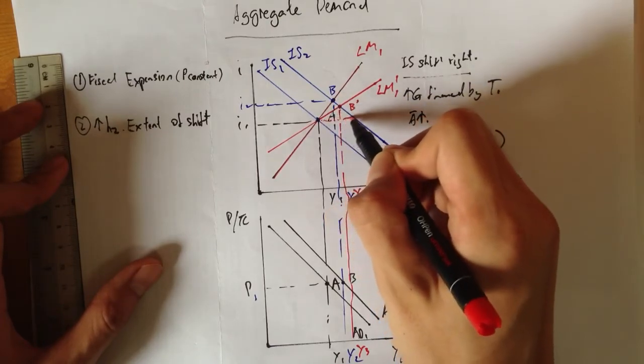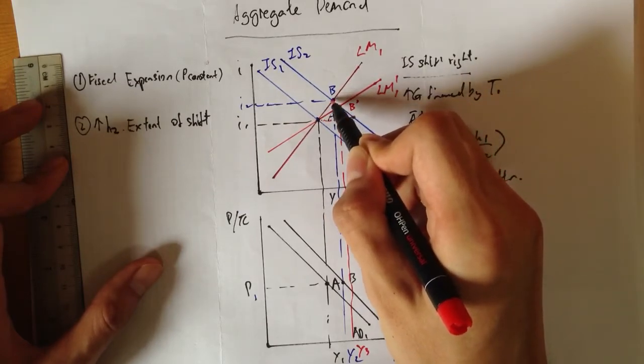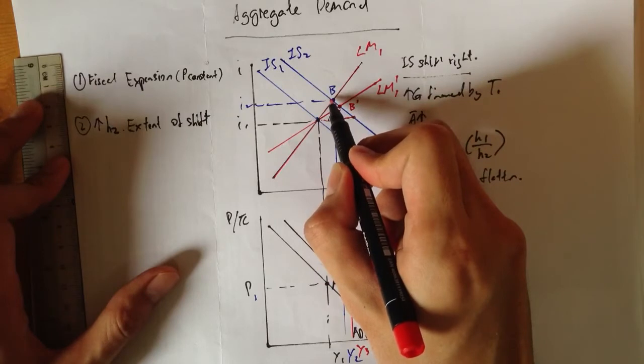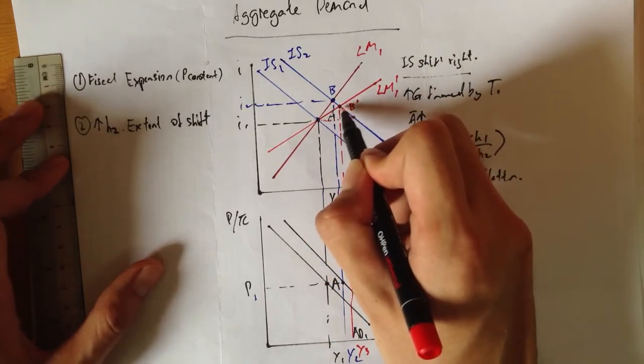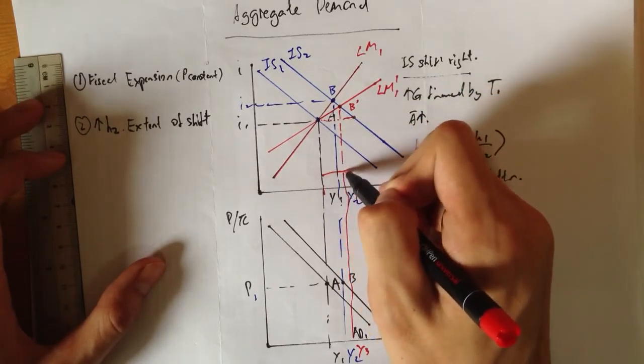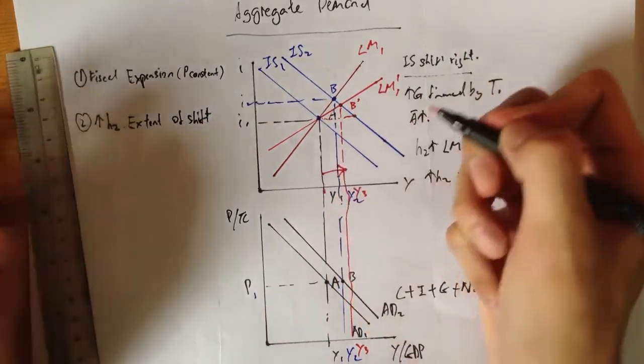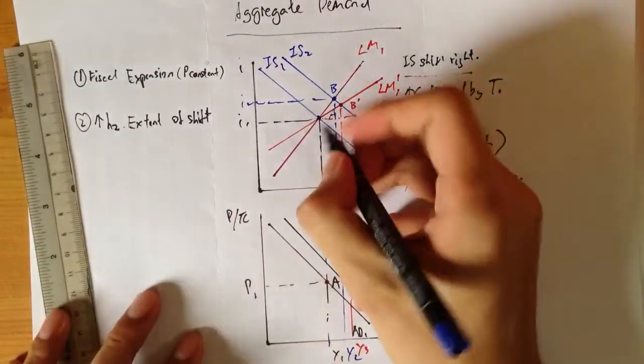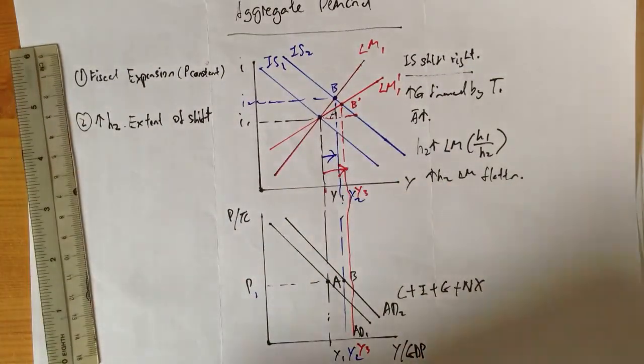Because the crowding out effect is from here to here. With this increase in H2, it's going to cause a flatter LM, and there's a smaller crowding out effect over here. Your Y increases from Y1 all the way to Y3. It is actually bigger than the initial shift indicated by this. So that's actually a smaller crowding out effect.